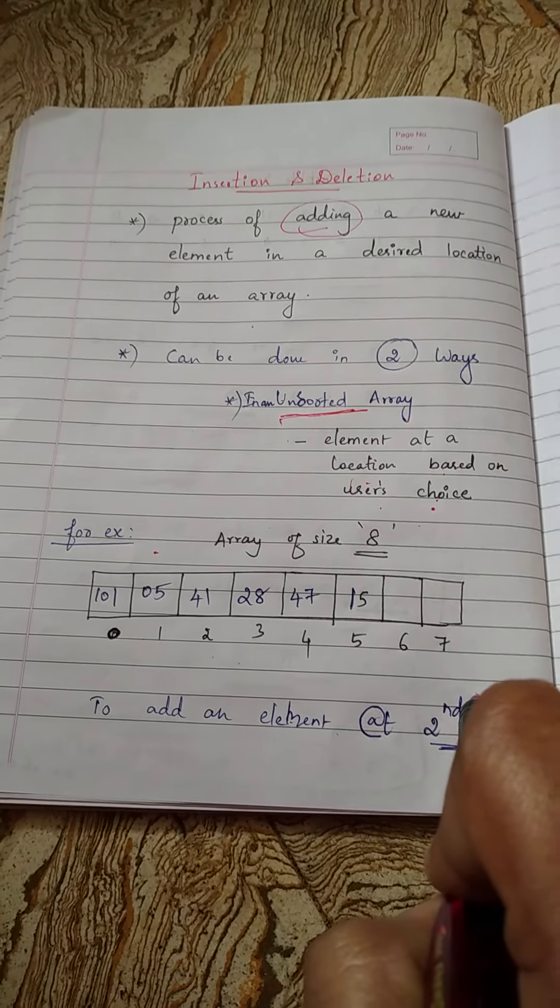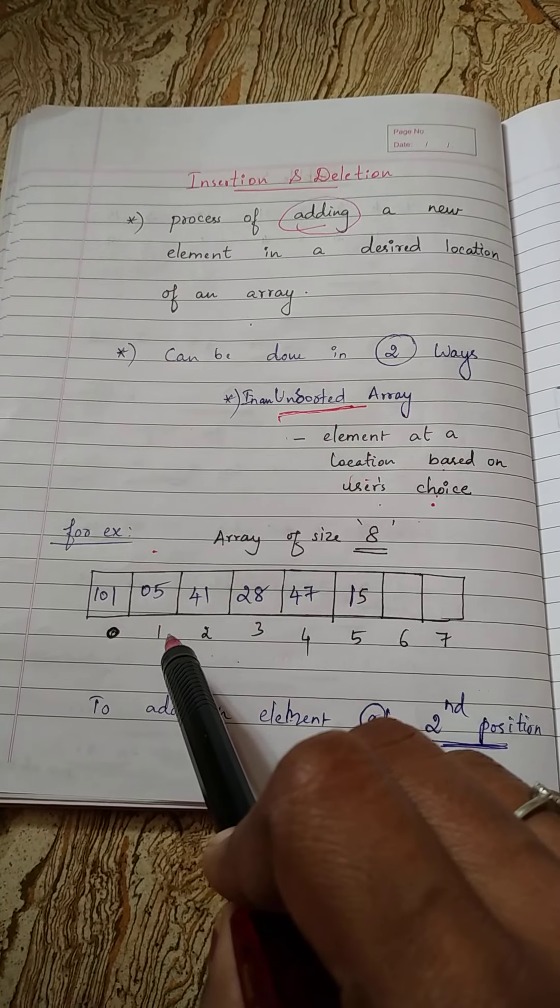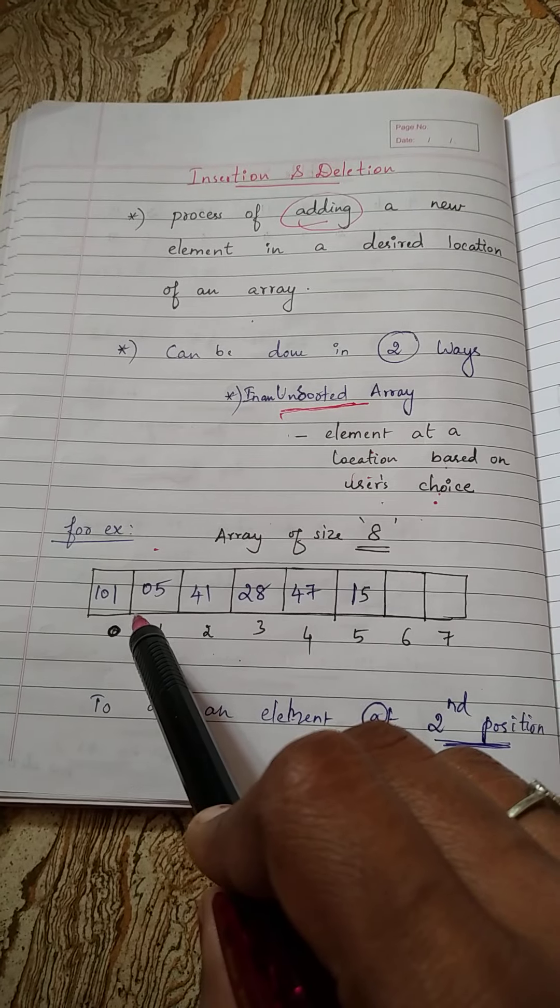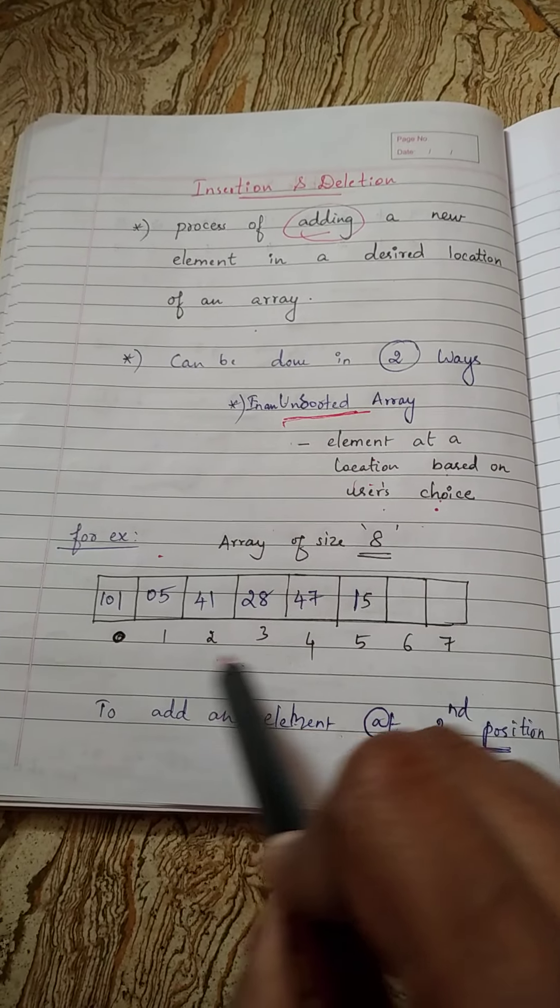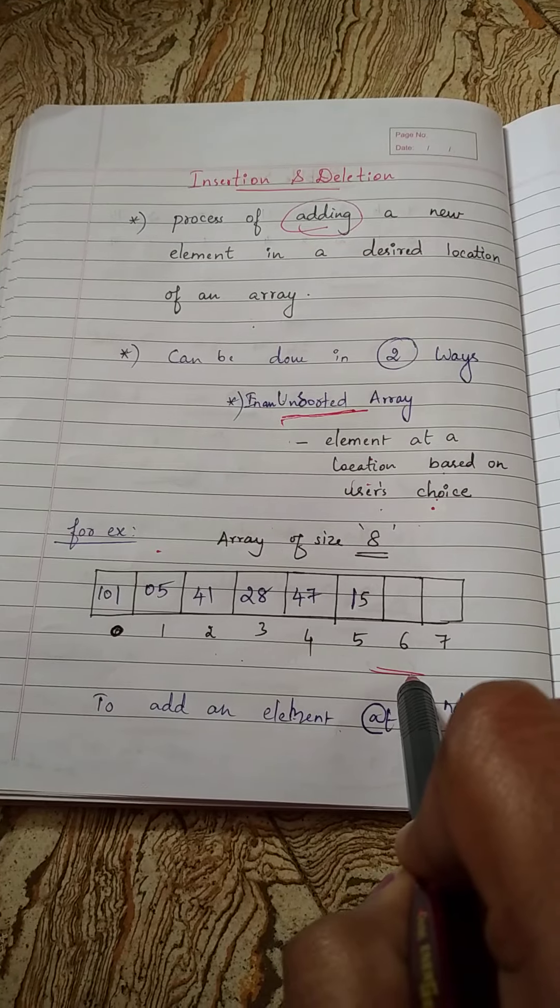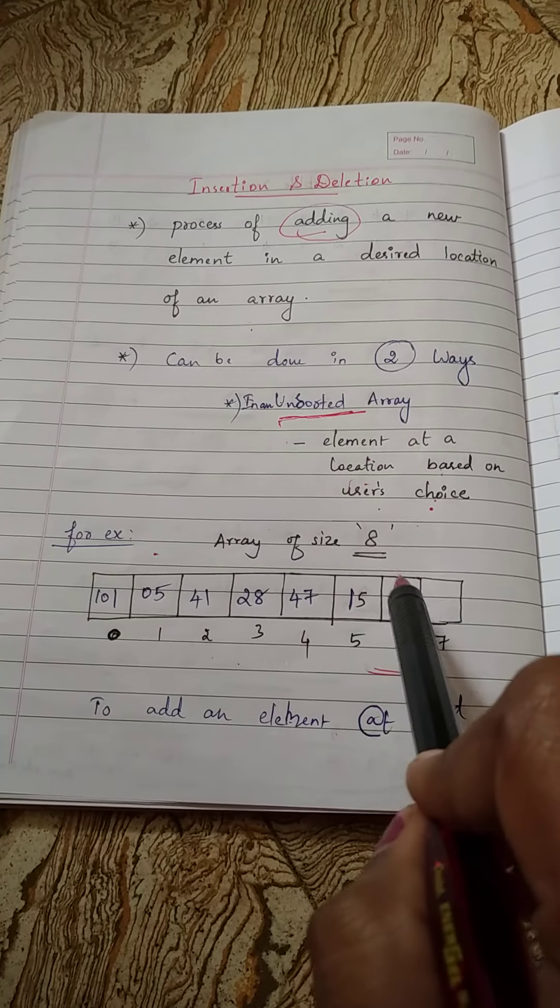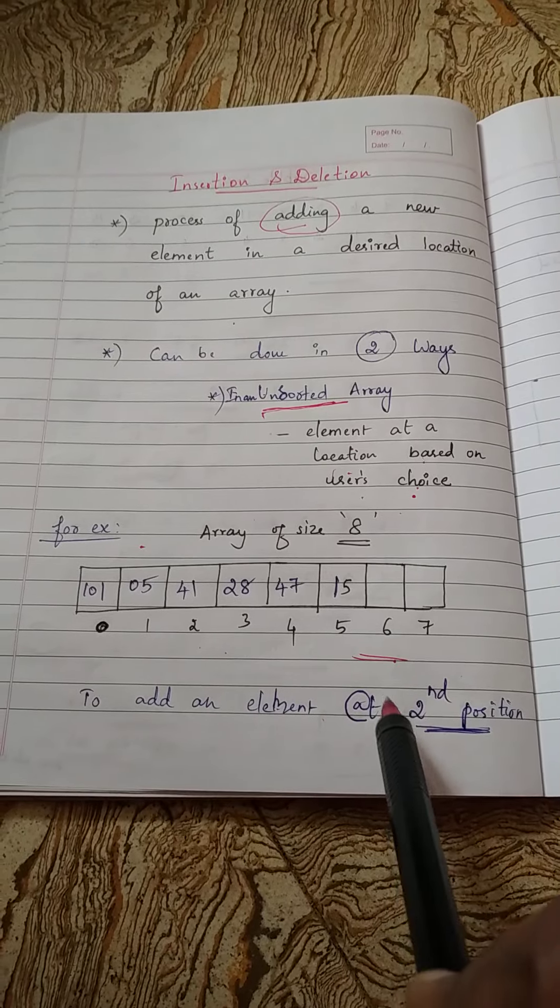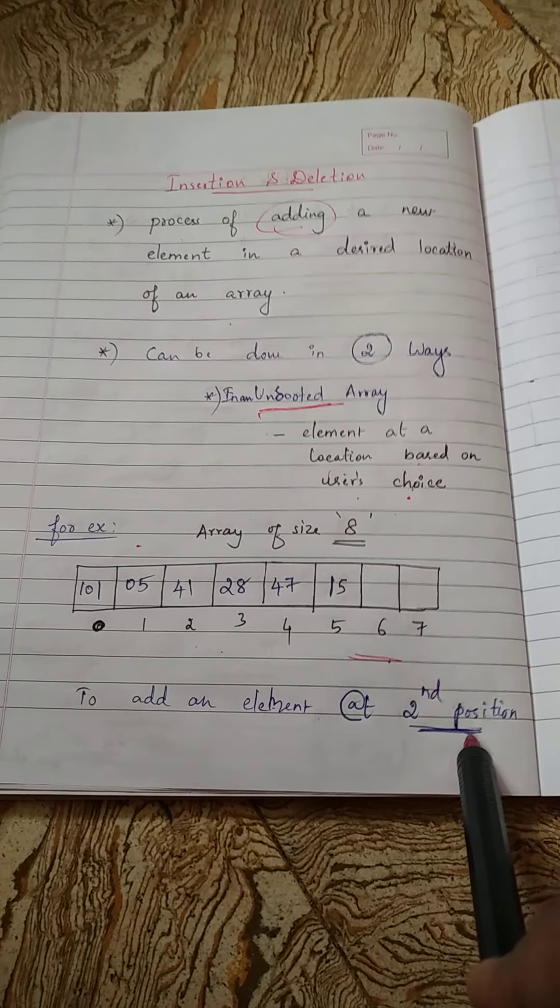Out of 8 elements, your array is filled with only 6 different elements. Two more spaces are there. So using this array, you can add still 2 more elements. Now your user wants to add an element at second position.